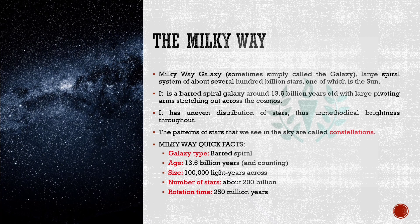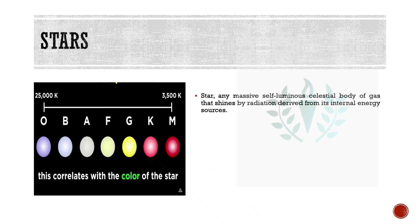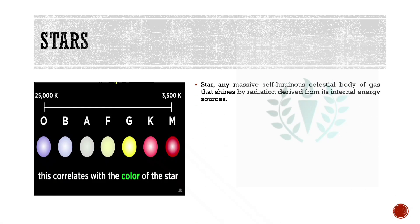Astronomers today still use constellations to name stars and meteor showers. Some quick facts about the Milky Way galaxy: it is barred and spiral, 13.6 million years old and still counting. Its size is about 0.1 million light years across. It has more than or about 200 billion stars and a single rotation takes about 250 million years.